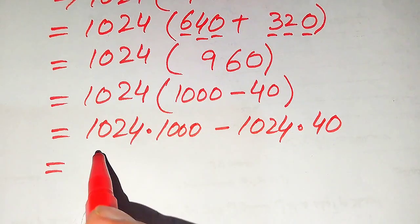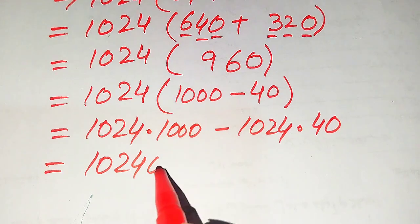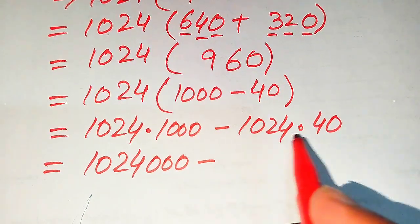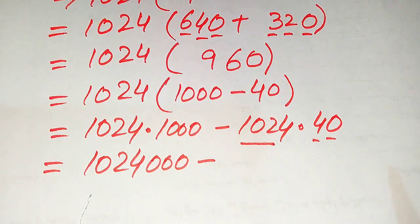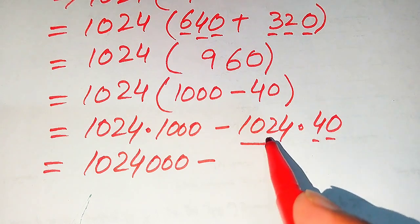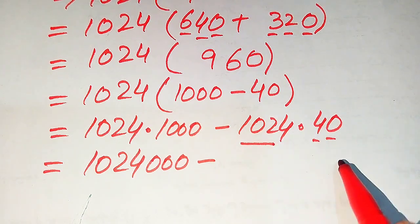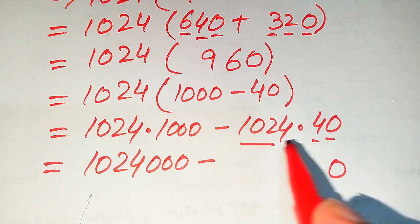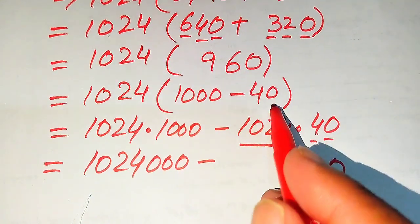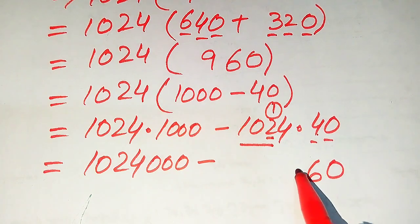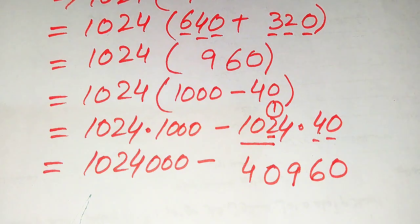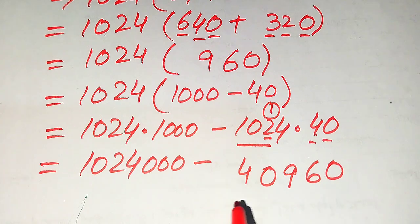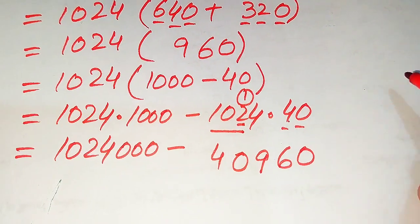1024 times 1000 equals 1,024,000. For 1024 times 40, we multiply 1024 by 4, giving 4096, then by 10, giving 40,960. So we have 1,024,000 minus 40,960.